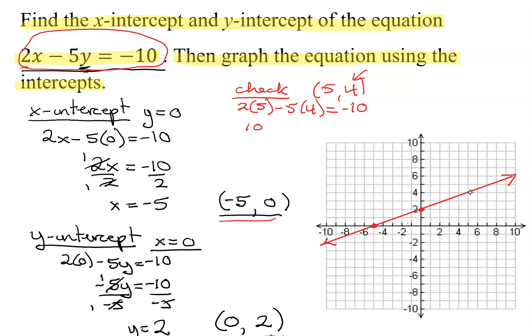2 times 5 is 10, minus 5 times 4 is 20, equals negative 10. What is 10 minus 20? Negative 10. Does negative 10 equal negative 10? Yes. So that's a good indication you've done the problem correctly.